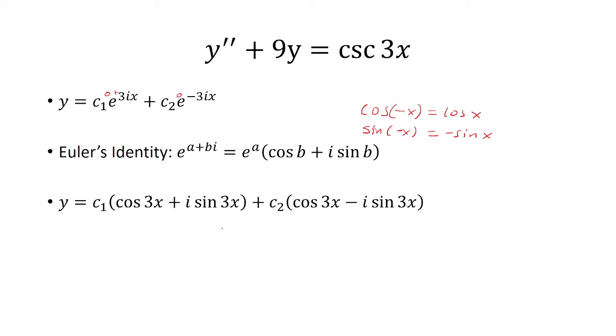Now at this point, I can factor out the cosine 3x, and we have c₁ plus c₂ as coefficients. And then for sine 3x, we have i times c₁ minus c₂.